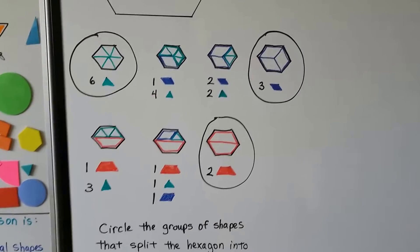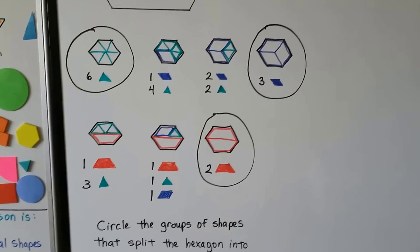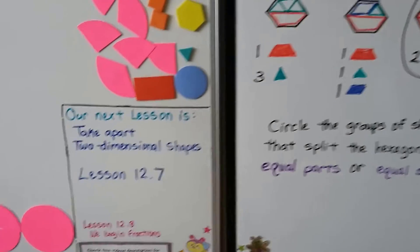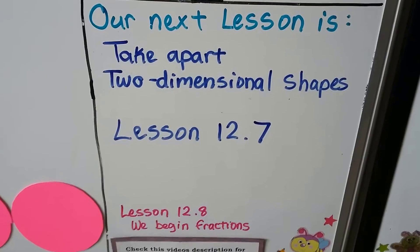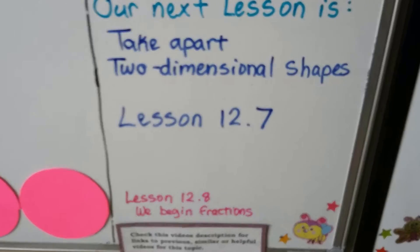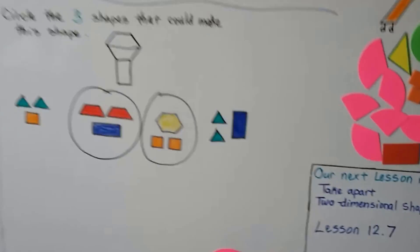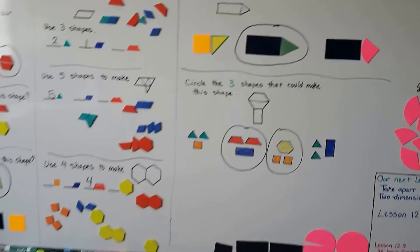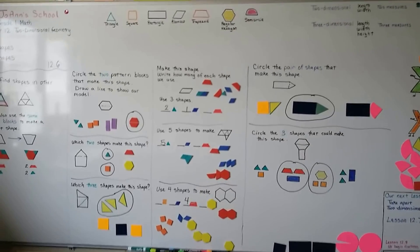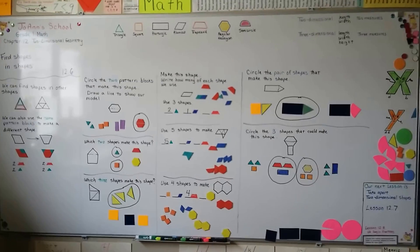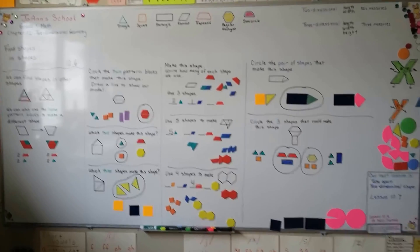Our next lesson is take apart two-dimensional shapes, lesson 12.7. Right after that we're going to be starting fractions. Keep playing with shapes and see how you can find shapes inside of other shapes. Get some construction paper or poster board and see if you can do it.